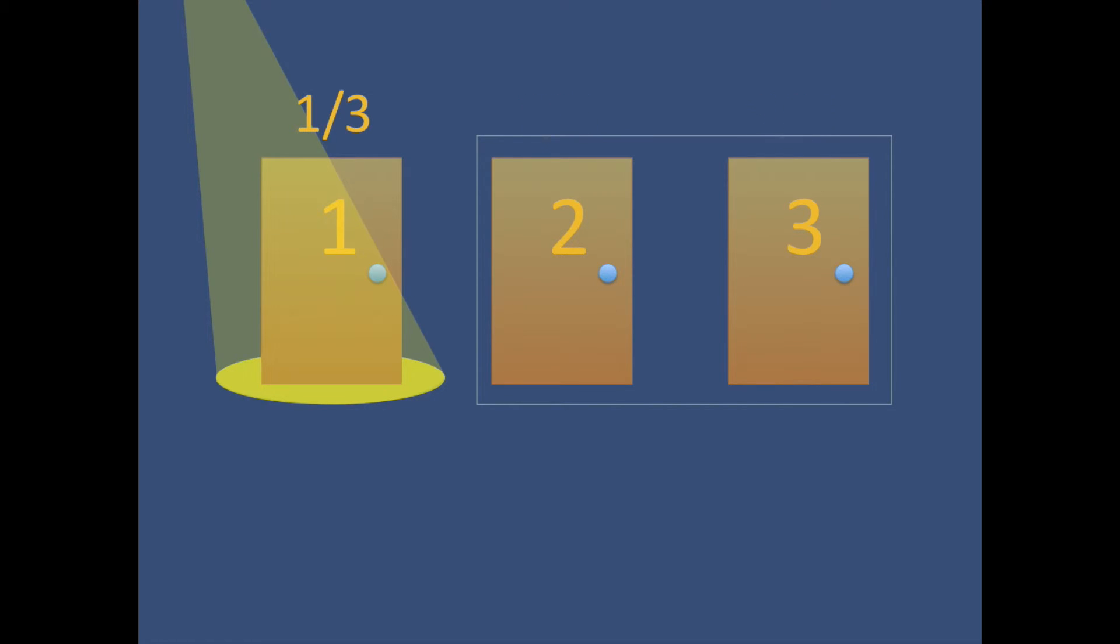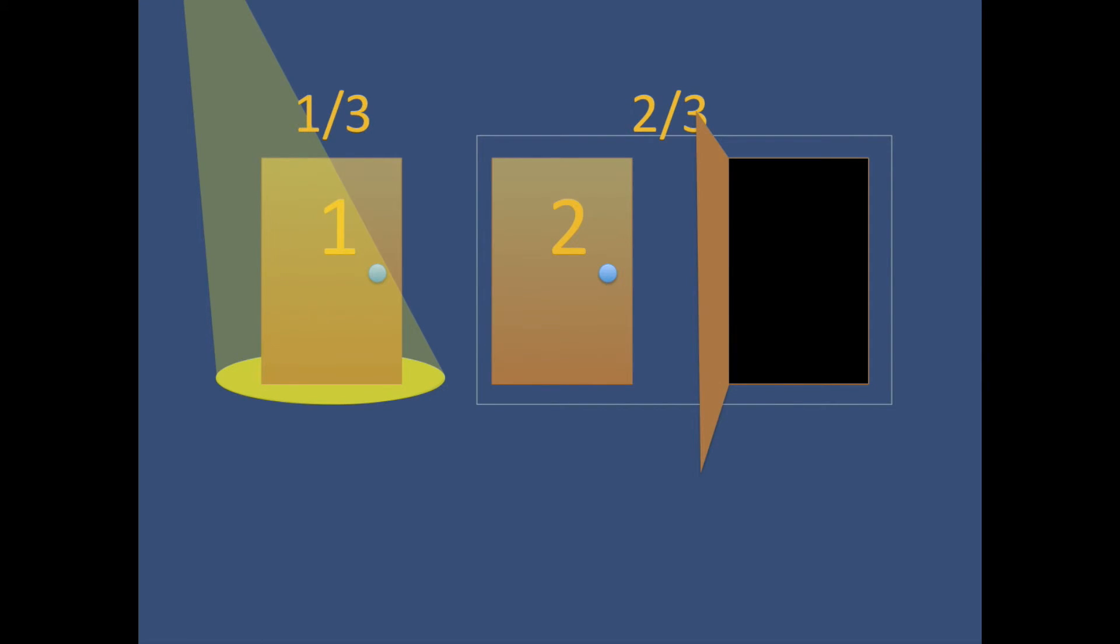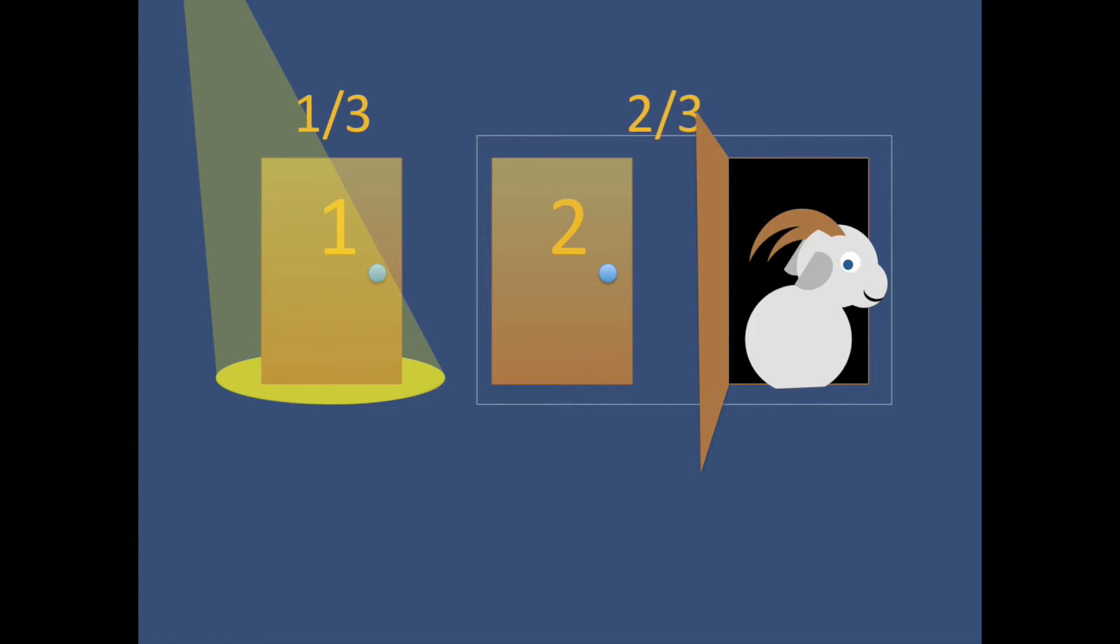Now, by opening a door, say door number three again, we can see the goat. This has not changed the probability of the first door, but we know that door number three has no chance of having the car, so that two in three chance is now resting all in door number two. So you should switch to get the best chance of picking that car.